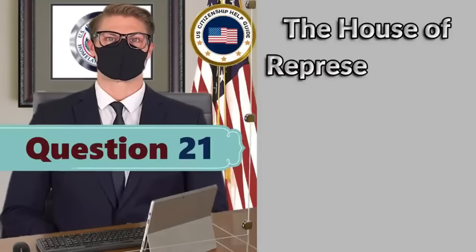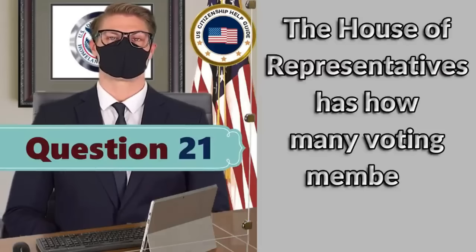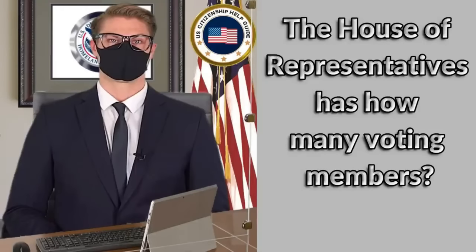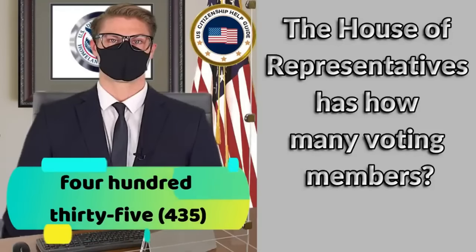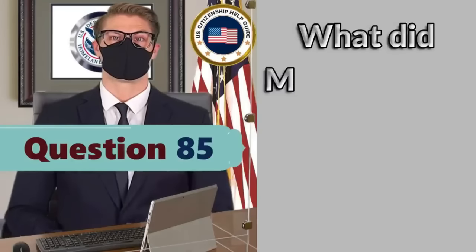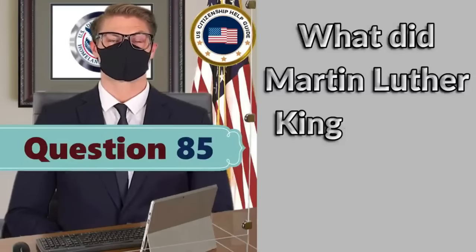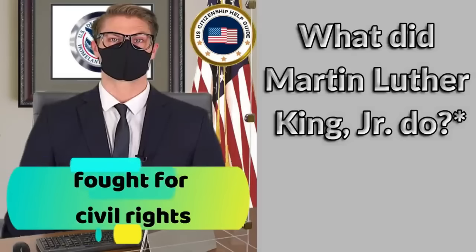The House of Representatives has how many voting members? 435. What did Martin Luther King Jr. do? Fought for civil rights.